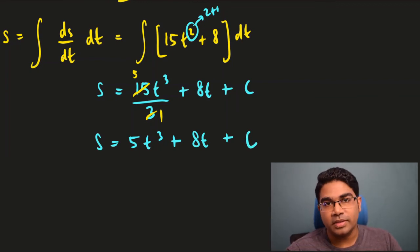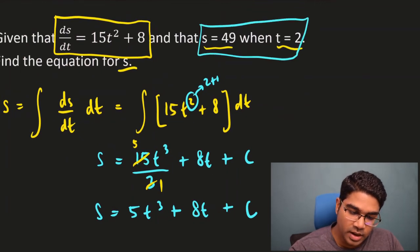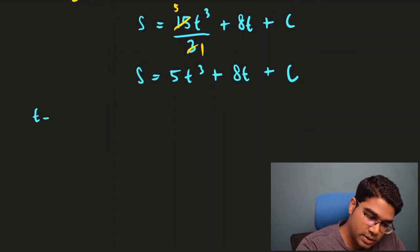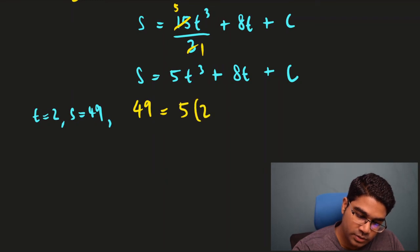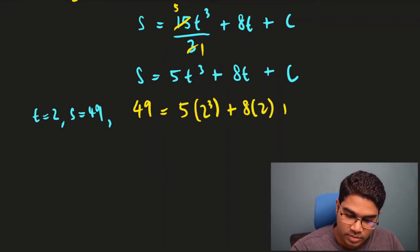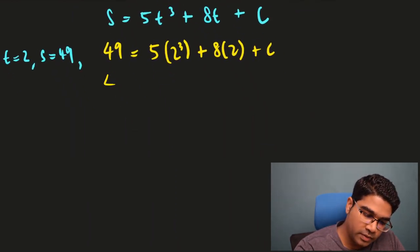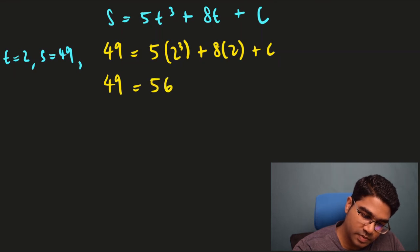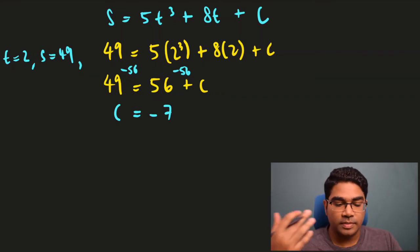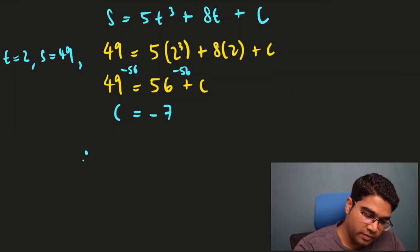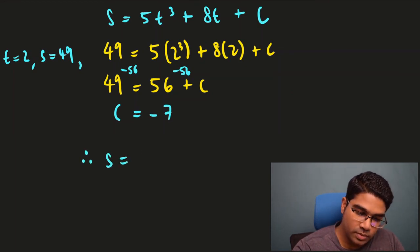Once again, we cannot leave c as an unknown — we need to find the value of c. We are given that s is 49 when t is 2, so we substitute into the equation. We get 49 equals 5 times 2 cubed plus 8 times 2 plus c. Working this out gives 49 equals 56 plus c. Subtracting 56 from both sides gives c equals negative 7. Now that we have the value of c, we substitute back to get the complete equation: s equals 5t cubed plus 8t minus 7.